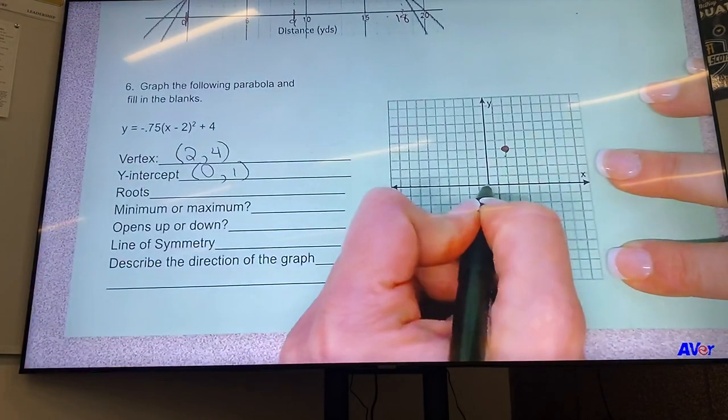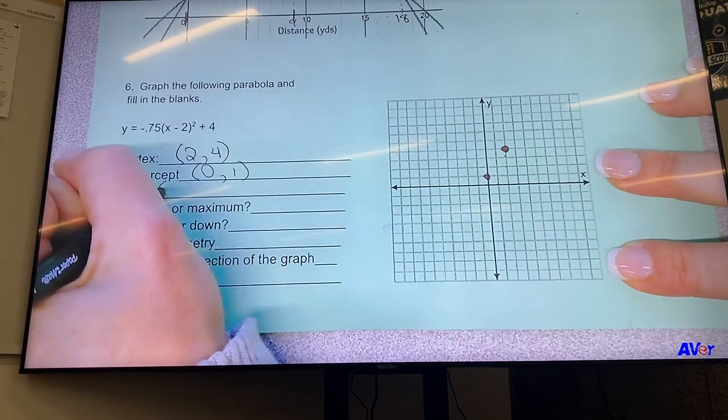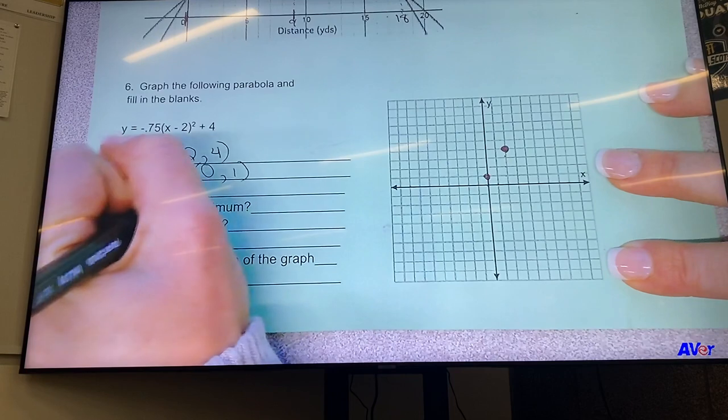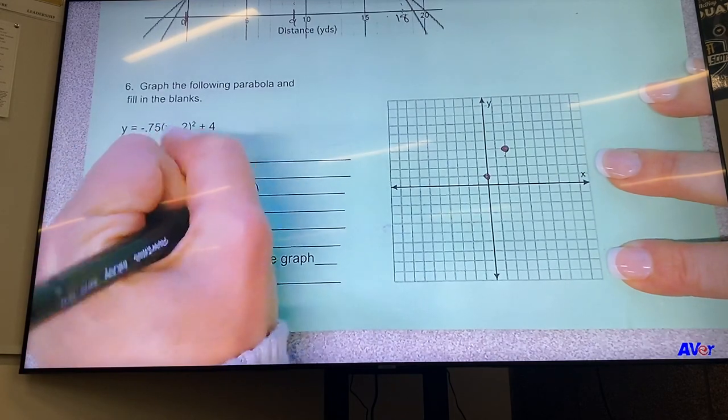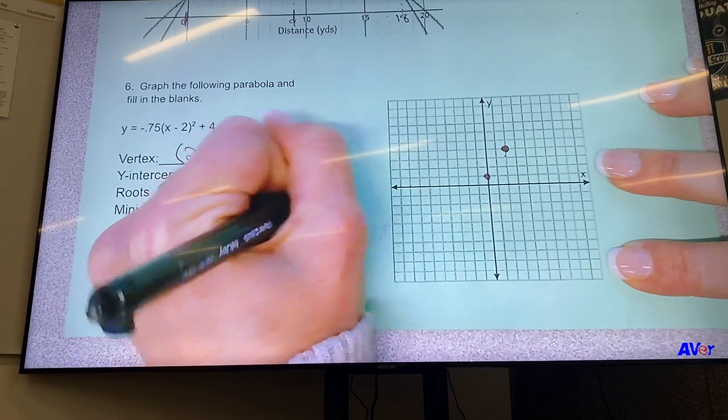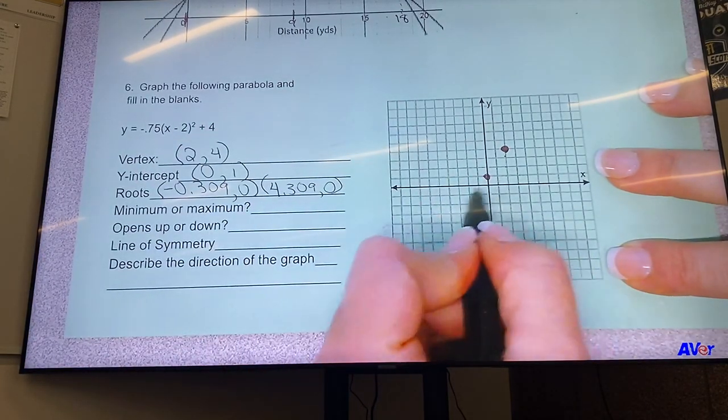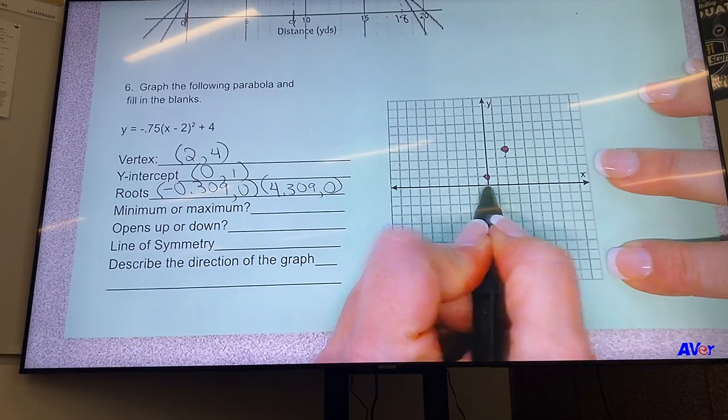So that's at (0, 1) right here. The roots were at -0.309 and at 4.309. So that's kind of tricky to graph exactly, but that's okay. It just means between 0 and 1, it crossed at -0.3, which is really close to the line there.